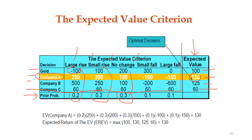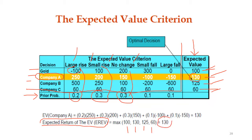So the optimal decision corresponds to the maximum value — investment in Company A. We also introduced a variable called EREV, the Expected Return of the Expected Value. The EREV is the maximum among the expected values: 100, 130, 125, 60 — so EREV equals 130.